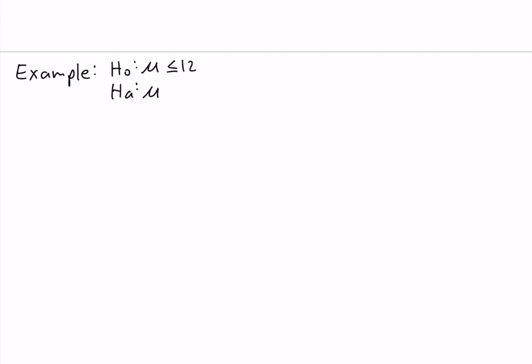Suppose mu naught is equal to 12. The sample size is equal to 25. The sample mean is equal to 14. The sample standard deviation is equal to 4.32. And the level of significance is equal to 0.05. In this problem, since we're given the sample standard deviation instead of the population standard deviation, that means that the population standard deviation, sigma, is unknown.